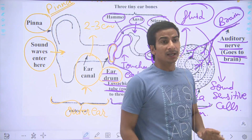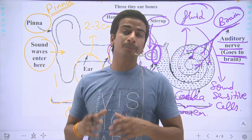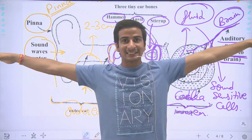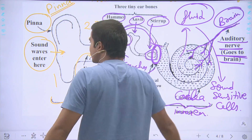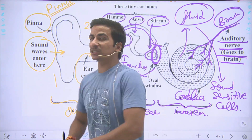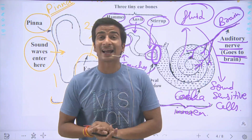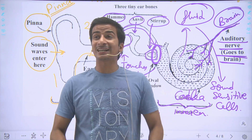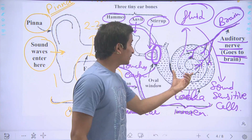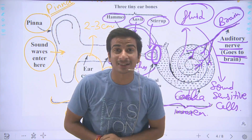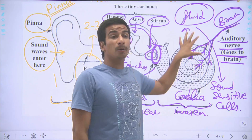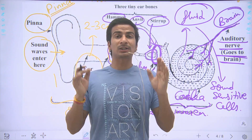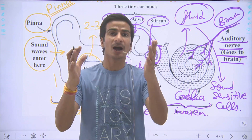This fluid inside the cochlea also plays an important role in the body's balancing. You may have noticed that if you spin around very quickly and then try to stop and stand still, you feel like you are floating or unbalanced. This is because the cochlea fluid starts to move, and since this fluid sends balance signals to the brain, when it is disturbed, you feel unbalanced.